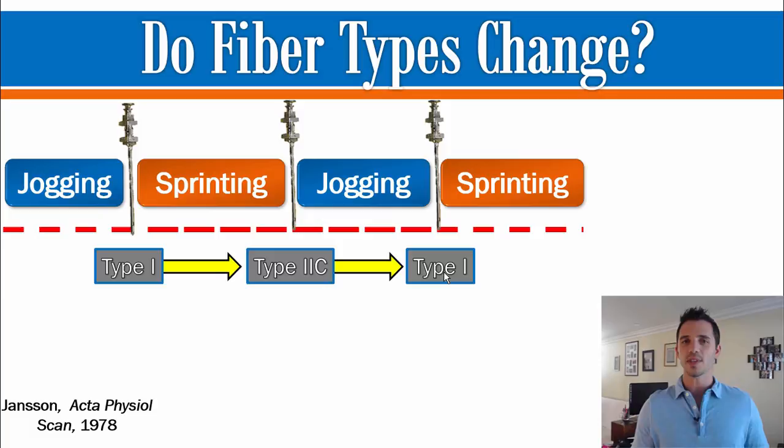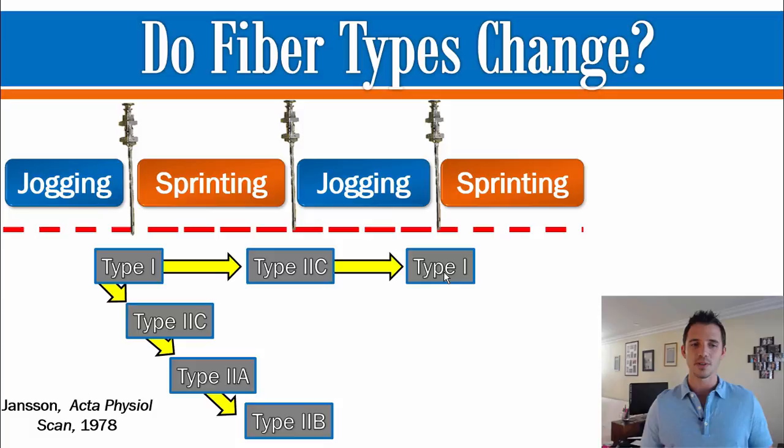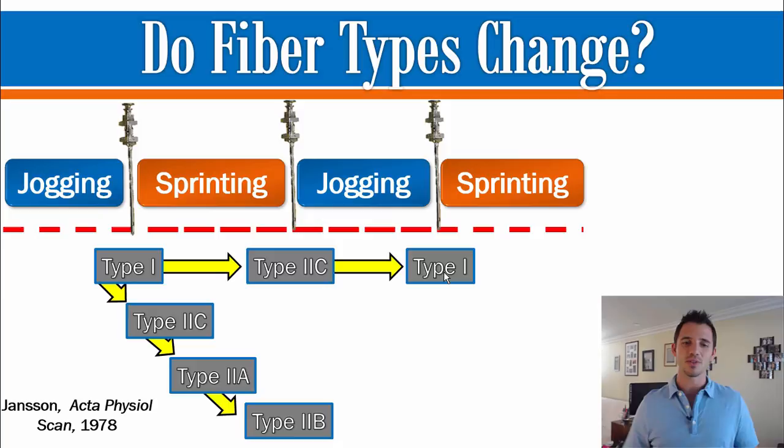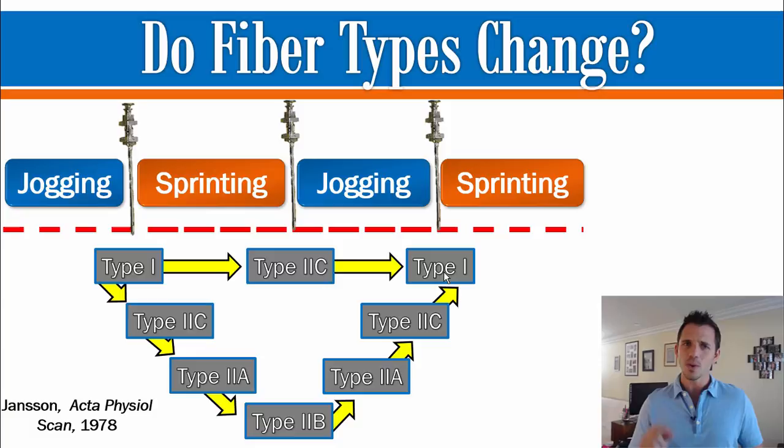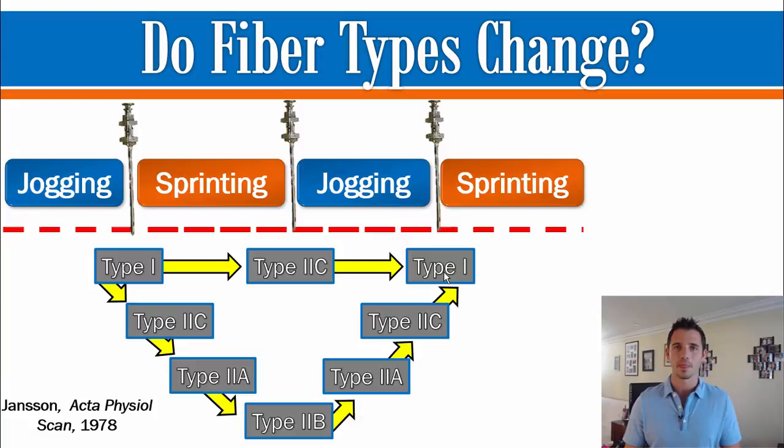They further extrapolated and suggested what's actually happening is: during the sprint training, we're trying to transition from a type 1 all the way to a 2B or 2X. Then when we start the jogging training again, we actually make our way back from being a 2B or 2X all the way down to our original type 1s. This was the first study that really, in a complex fashion, outlined that not only is there a conversion with exercise training, but it's happening back and forth.